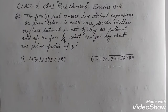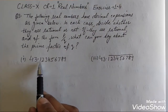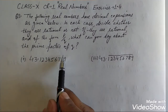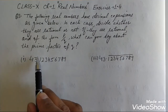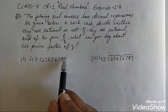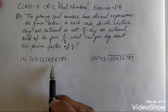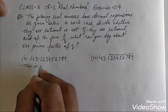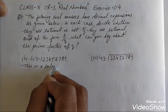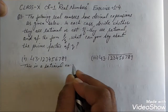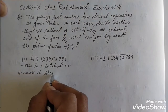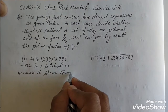Let's start the question. The first part is 43.123456789. It has a terminating decimal expansion, hence it is a rational number. We will write: this is a rational number, because it shows a terminating decimal expansion.